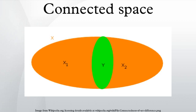A stronger notion is that of a path-connected space, which is a space where any two points can be joined by a path. A subset of a topological space X is a connected set if it is a connected space when viewed as a subspace of X.